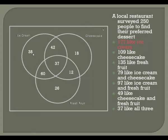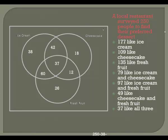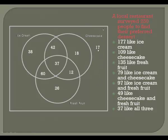Now at this point, a lot of people are going to think they're done, but you're not quite done. Because I need to define my entire universe — not just the people who chose one of these three desserts, but also the people who didn't choose any. So I'm going to take my original 250 and subtract away all of these numbers — the people who liked any of these three — and I'm going to get 17 people who liked none of these choices. And that's how we work through these problems.